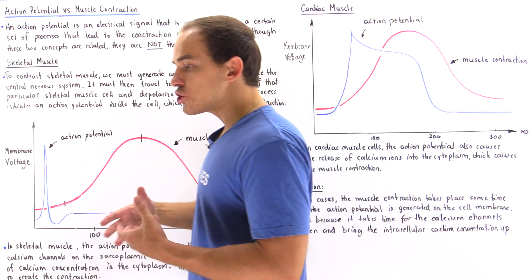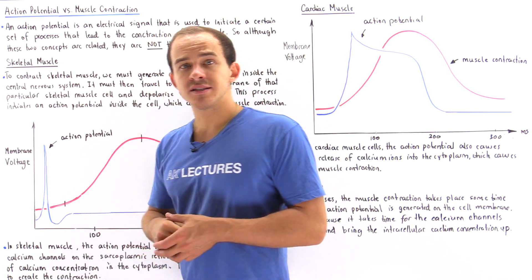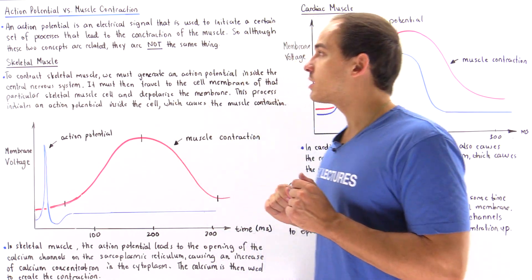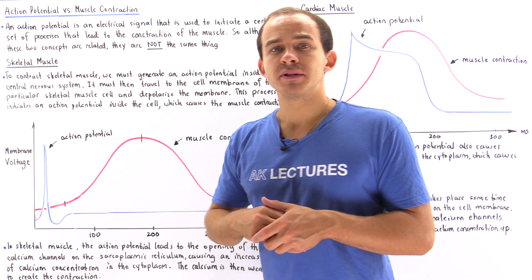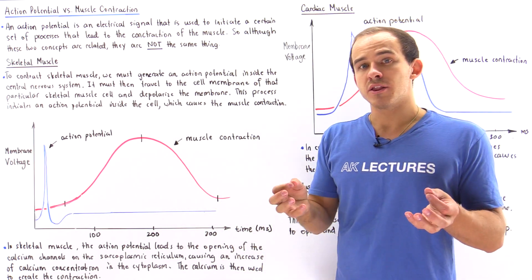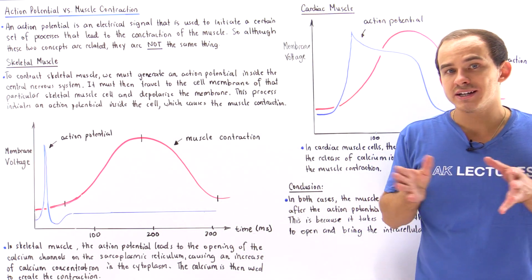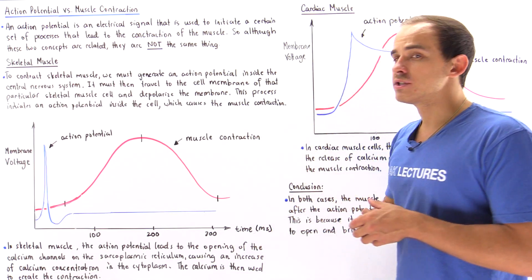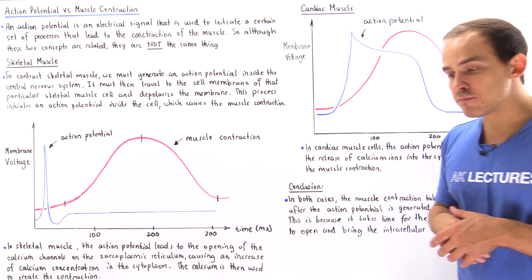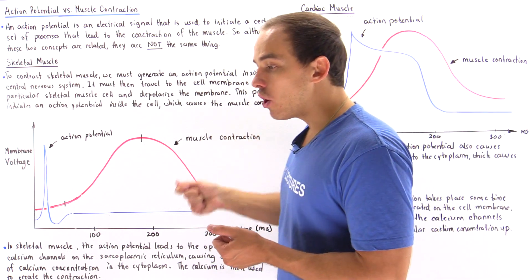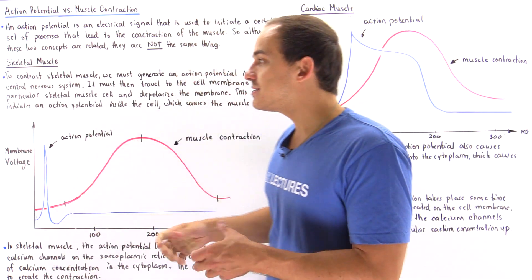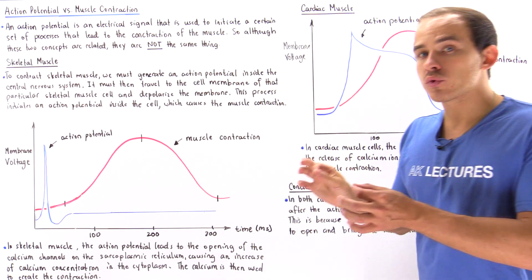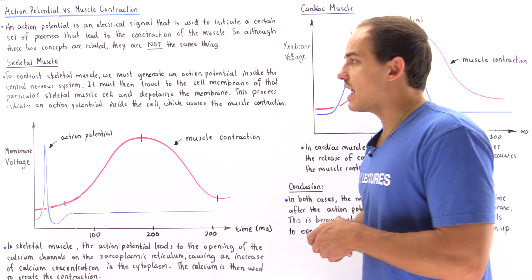When students are learning about these two concepts, they forget that these two concepts are different, but they are connected. An action potential is an electrical signal that is usually generated in the nervous system of our body, and that electrical signal travels to a particular muscle cell and causes that particular muscle cell to contract. So although these two concepts are related, they are not the same thing.